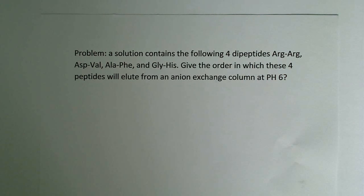A solution contains the following four dipeptides: arginine-arginine, aspartic acid-valine, alanine-phenylalanine, and glycine-histidine. Give the order in which these four peptides will elute from an anion exchange column at pH 6.